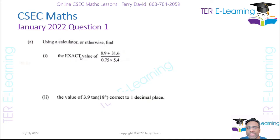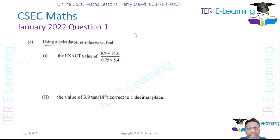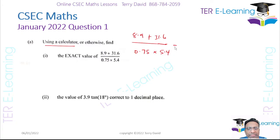Our first question here — they said using a calculator or otherwise. Normally I tell students, because they give you the option of using the calculator, you might as well use it. What we're trying to work out is 8.9 plus 31.6, all over 0.75 multiplied by 5.4. What I suggest you do is work out the numerator first, then work out the denominator, and then divide.